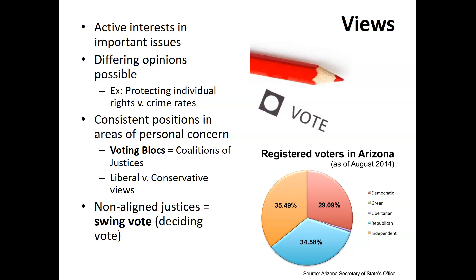Regarding the views: active interest in the cases and issues is important. Differing opinions are possible — you might have some people looking at protecting individual rights versus crime rates, or a different viewpoint altogether. You want the differing of opinions; it's part of the discussion and deciding the legal questions. There are consistent positions in areas of personal concern, whether it's liberal versus conservative, and this can lead to voting blocs — coalitions of justices — which can be a benefit but also a problem when it's more split along liberal or conservative or party lines.